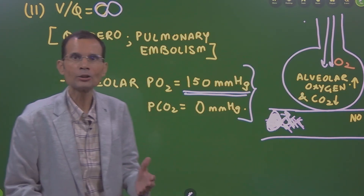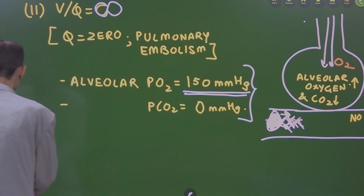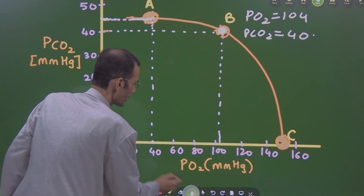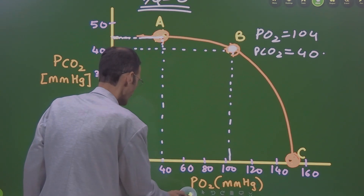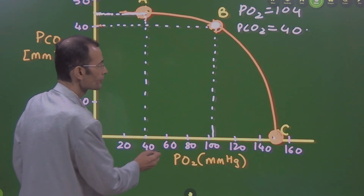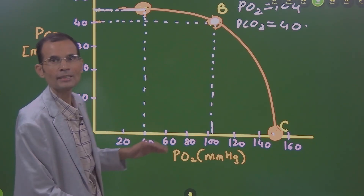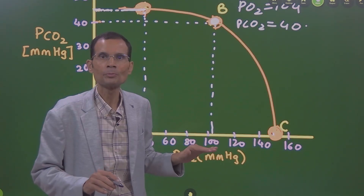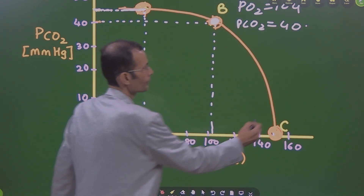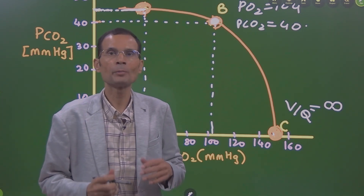This set of values — PO2 = 150 and PCO2 = 0 — tells us the V/Q ratio is infinity and this is pulmonary embolism. Point C is depicting this relationship: on the horizontal axis PO2 is almost 150 mmHg, and on the vertical PCO2 axis it has not gone up at all, meaning PCO2 is 0. Perfusion is 0 and therefore the ventilation-perfusion ratio is infinity — this is the condition of pulmonary embolism.